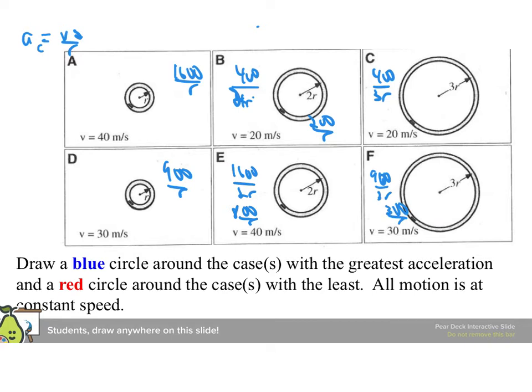So looking at that, 1,600 over R is clearly the most. 900 over R is more than that, 800 is more than that. And we've got to be careful. 400 over 3 is something like 130. So the least is going to be this one.